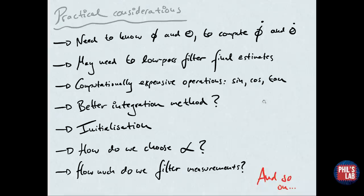We could maybe use a better integration method. Right now, we're using simple Euler integration, but we could use trapezoidal or something like that. Also, initialization—maybe it'd be a good idea to guess our initial angle using the accelerometer and feed that as our starting point for the complementary filter. A big question is, how do we choose alpha? And we'll look at that later.